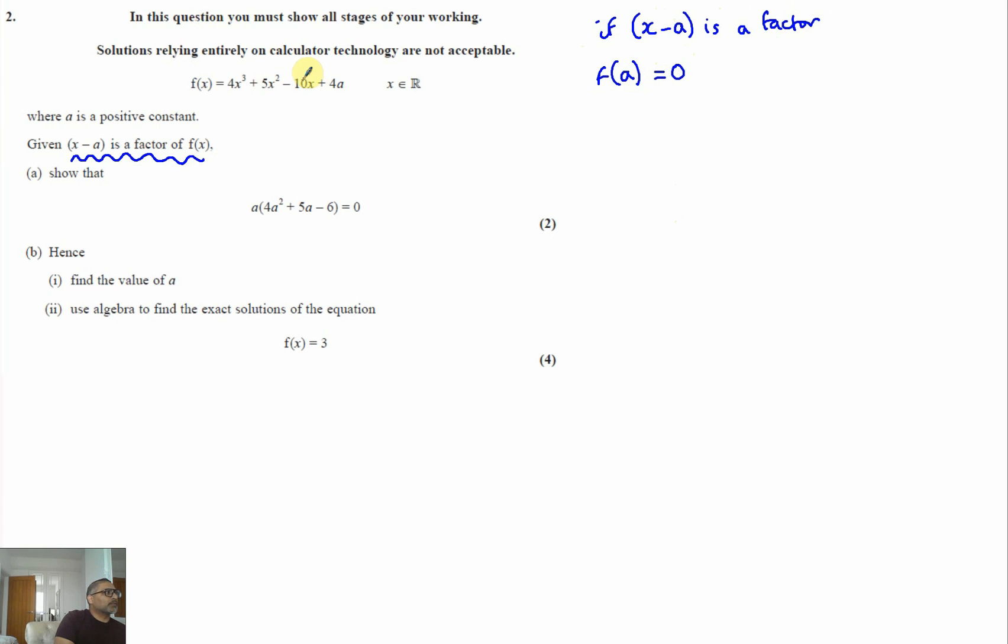So let's work that out first. What is f of a? f of a will be 4a cubed plus 5a squared minus 10a plus 4a.